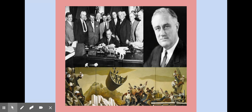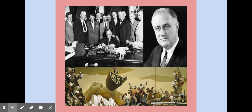Because of this New Deal coalition, the Democrats won the White House most of the time between 1932 and 1968, with the exception of Eisenhower. They would also control Congress most of the time between 1930 and 1994, with the exception of the Senate being taken a couple of times here and there.